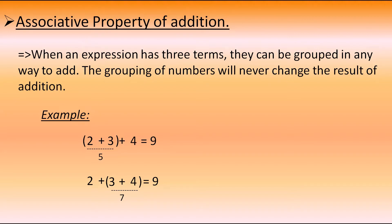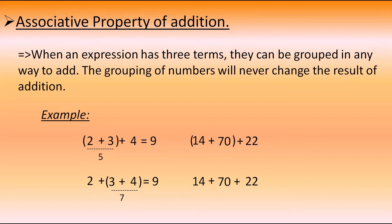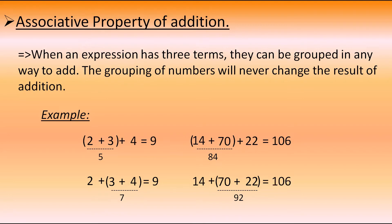Let's take one more example with three numbers: 14, 70, and 22. I'll make a group of 14 and 70 in the first expression, and a group of 70 and 22 in the second expression. First expression: 14 plus 70 equals 84, and 84 plus 22 equals 106. Second expression: 70 plus 22 equals 92, and 92 plus 14 equals 106. We got the same result, confirming that the grouping of numbers will never change the result of addition.